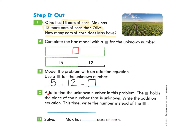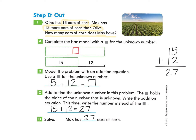Part C: add to find the unknown number. The square holds the place of the unknown number. Write the addition equation — this time write the number instead of the square. We complete this problem: 15 plus 12. I'll write it vertically and add the ones column first: 5 plus 2 equals 7. Then the tens column: 1 plus 1 equals 2. So 15 plus 12 equals 27. How many ears of corn does Max have? Max has 27 ears of corn.